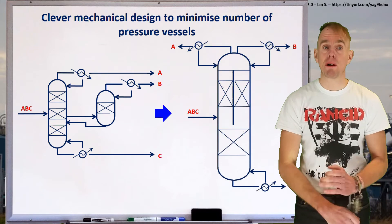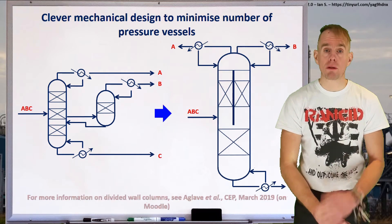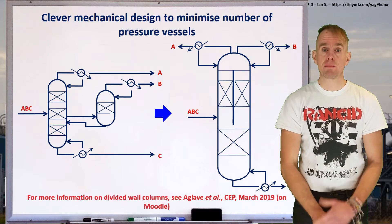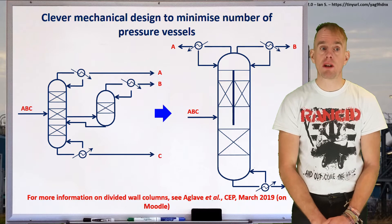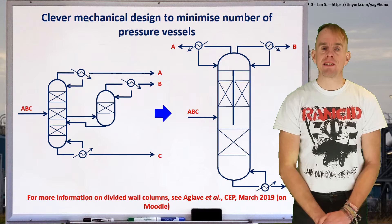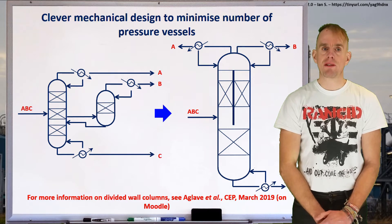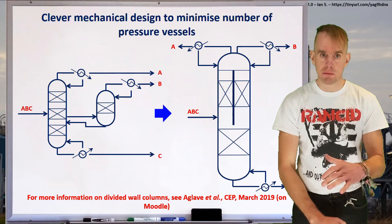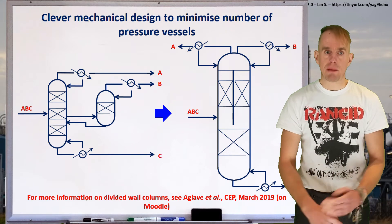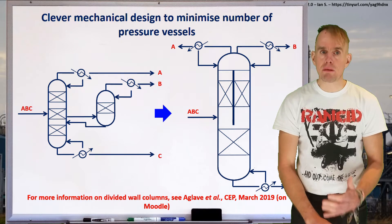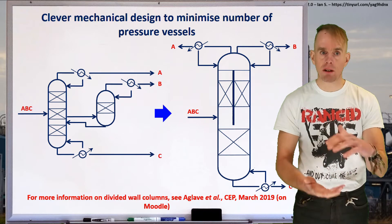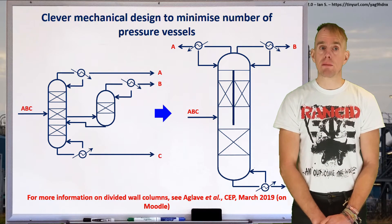Here on the board is a schematic diagram of one way in which you can do that — it's called a divided wall column. I've put for you on Moodle a very good review paper from the professional journal Chemical Engineering Practice on divided wall columns. If we have a look in detail at that schematic diagram, we can see that in the stripping section of the column — the bottom of the column — we've got a configuration, drawn here with a packed bed, that looks very similar to the base of the primary column in the partially coupled sequence: just a packed bed for separating out the least volatile component C.